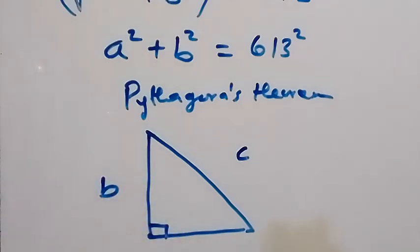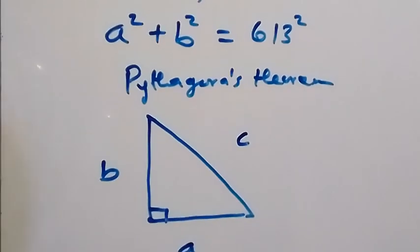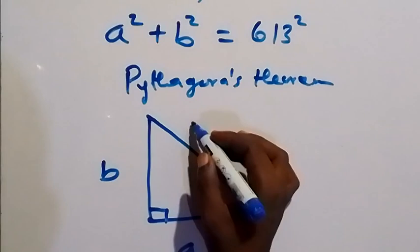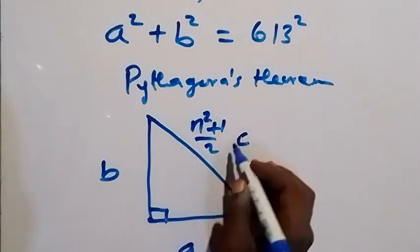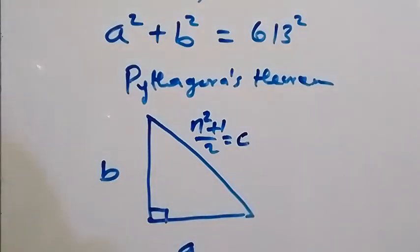b. Then from here in terms of n, we have this side which is c can also be written as n squared plus one over two. So this equals c. And also for this side which is a, we can write this side as n.